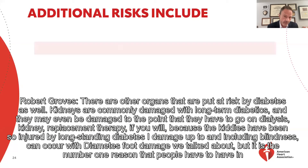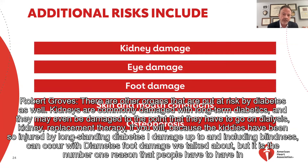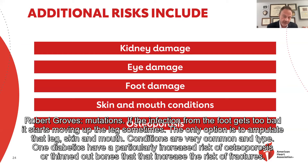There are other organs put at risk by diabetes as well. Kidneys are commonly damaged with long-term diabetics and may even be damaged to the point that they have to go on dialysis — kidney replacement therapy — because the kidneys have been so injured by longstanding diabetes. Eye damage up to and including blindness can occur with diabetes. Foot damage is the number one reason people have to have amputations. If the infection from the foot gets too bad and starts moving up the leg, sometimes the only option is to amputate. Skin and mouth conditions are very common, and type 1 diabetics have a particularly increased risk of osteoporosis or thinned-out bones that increase the risk of fractures.